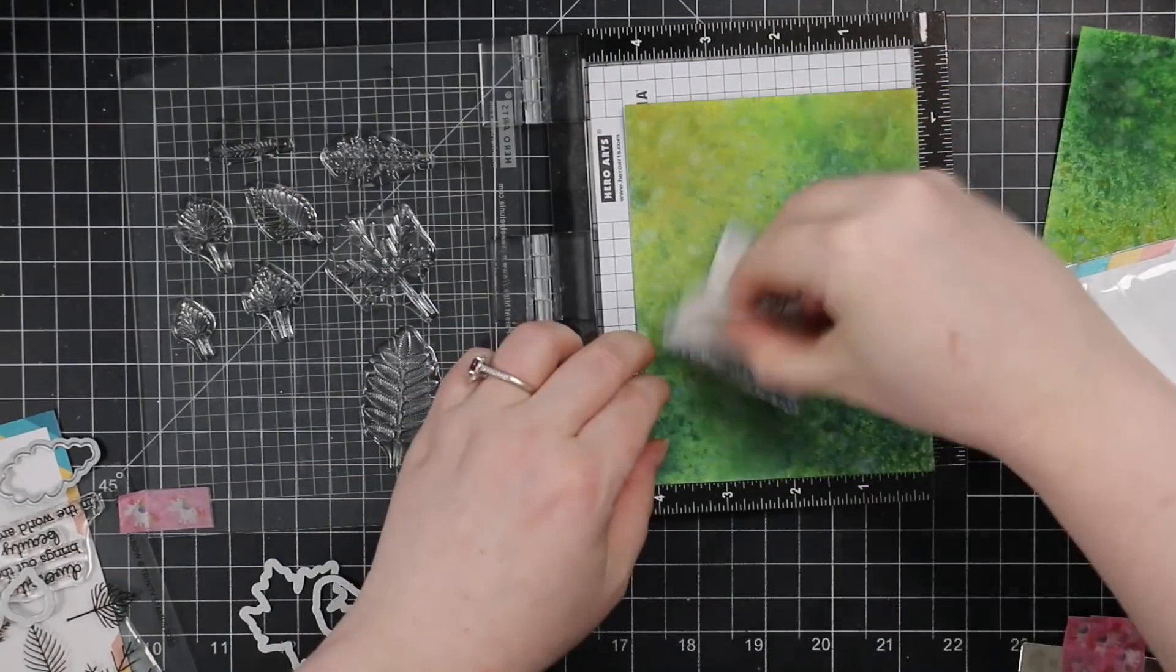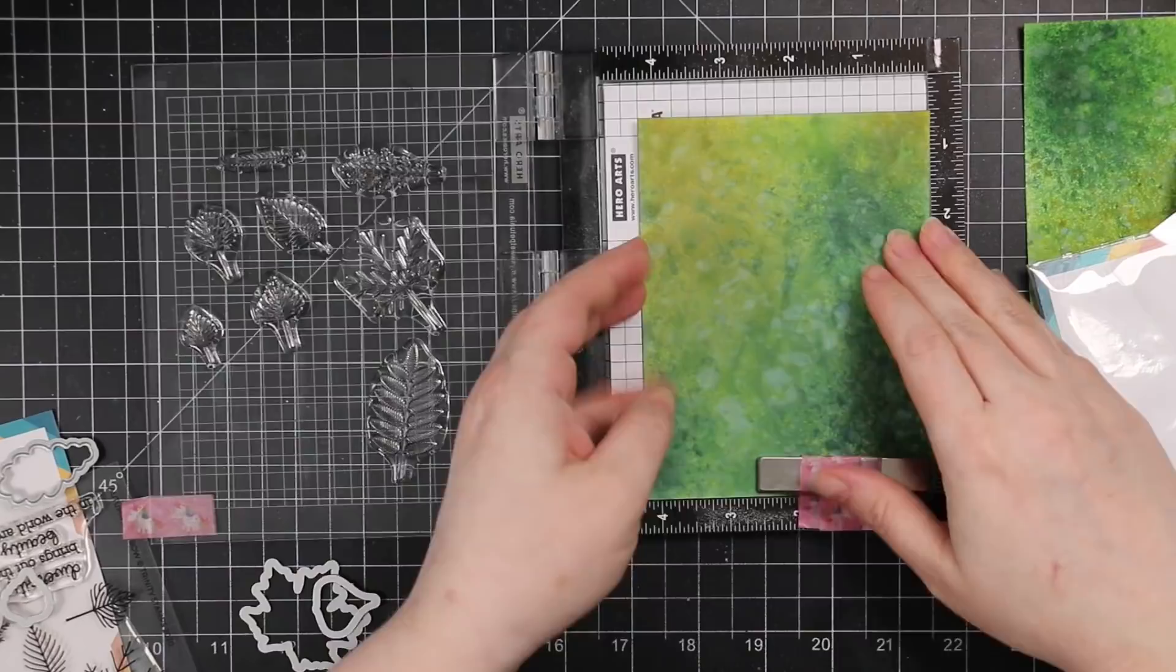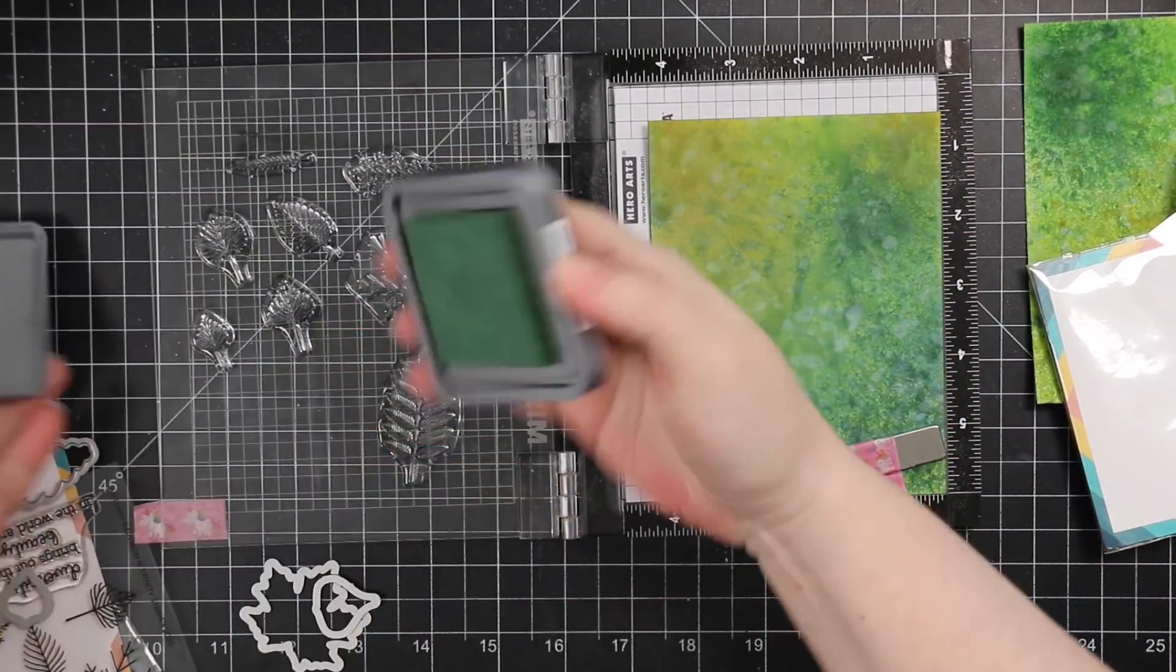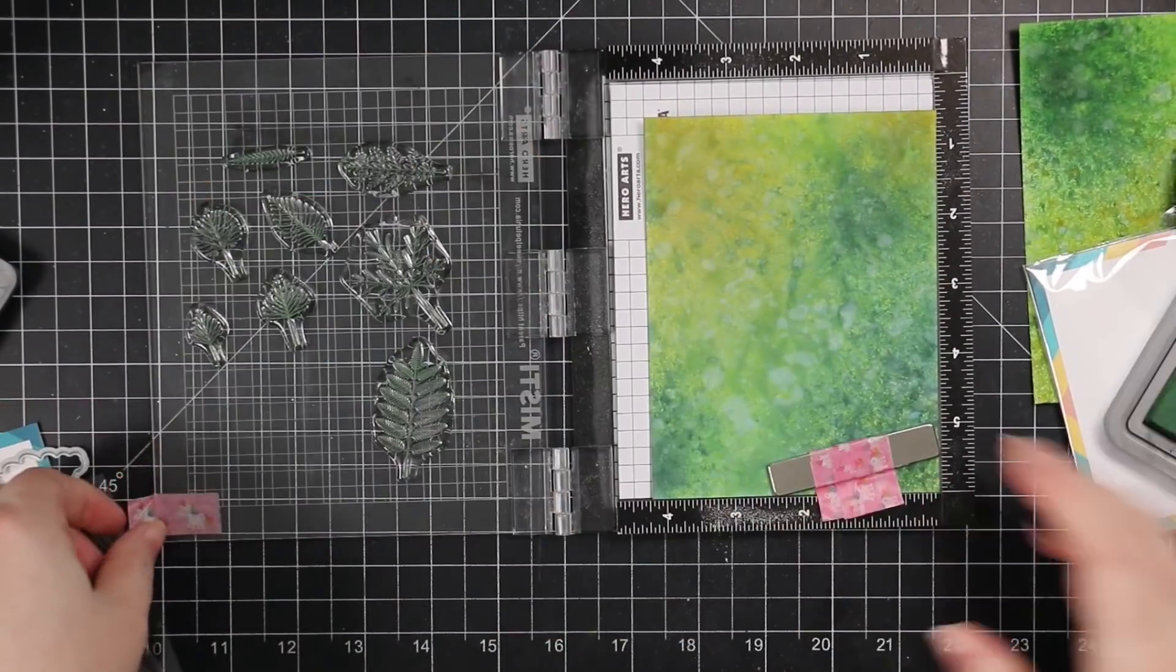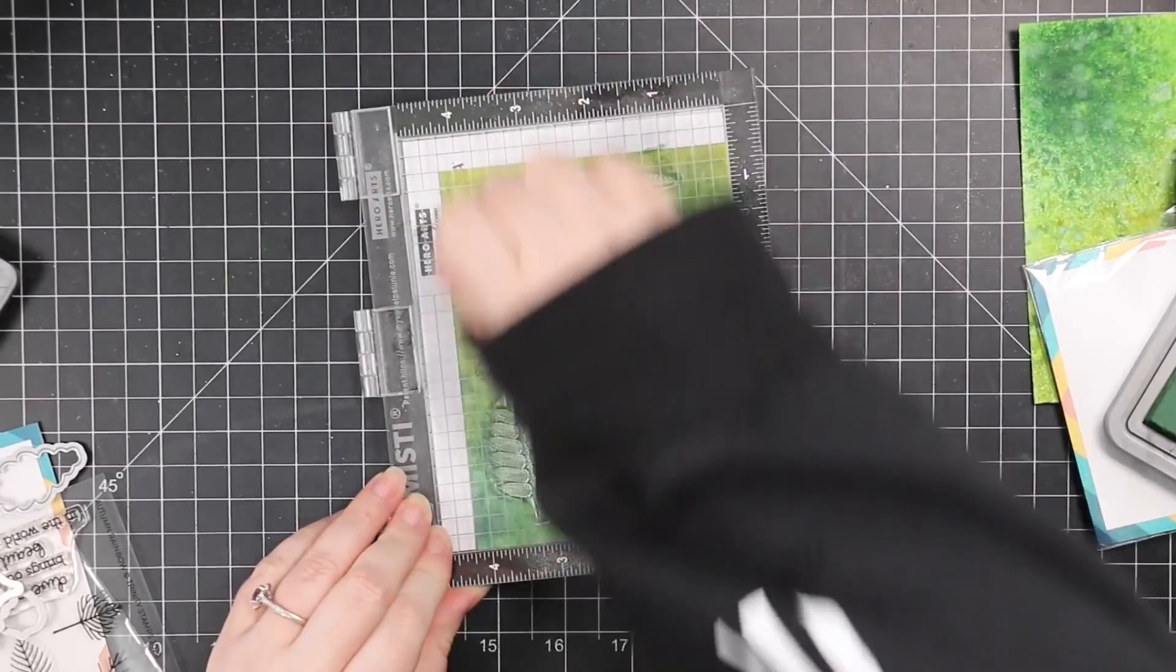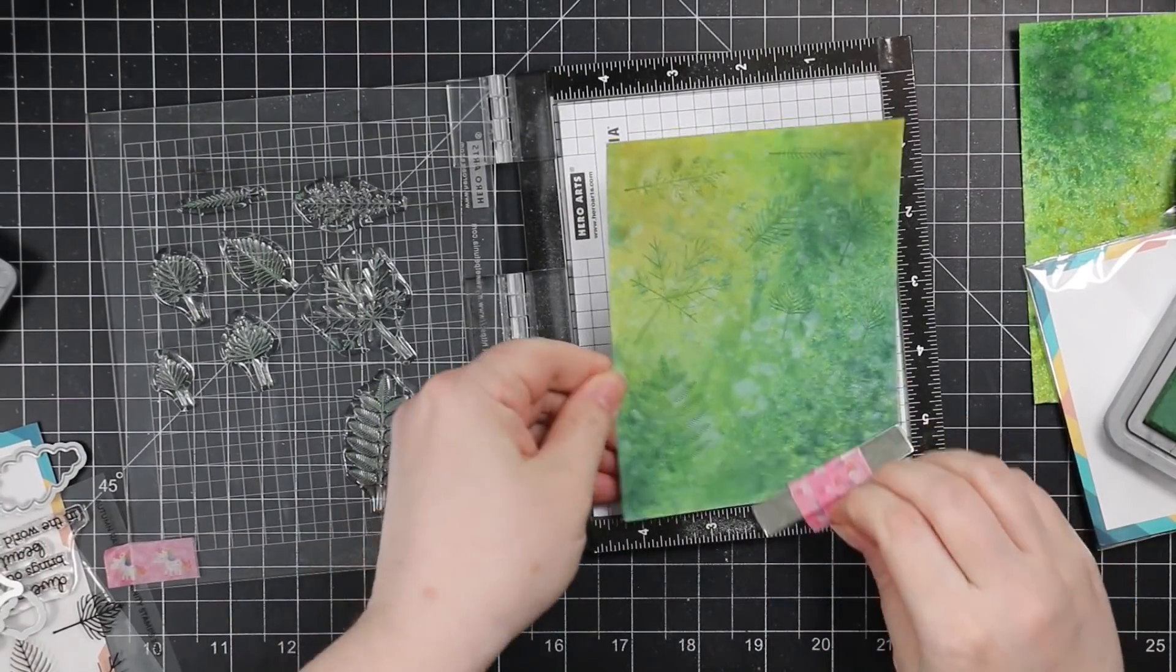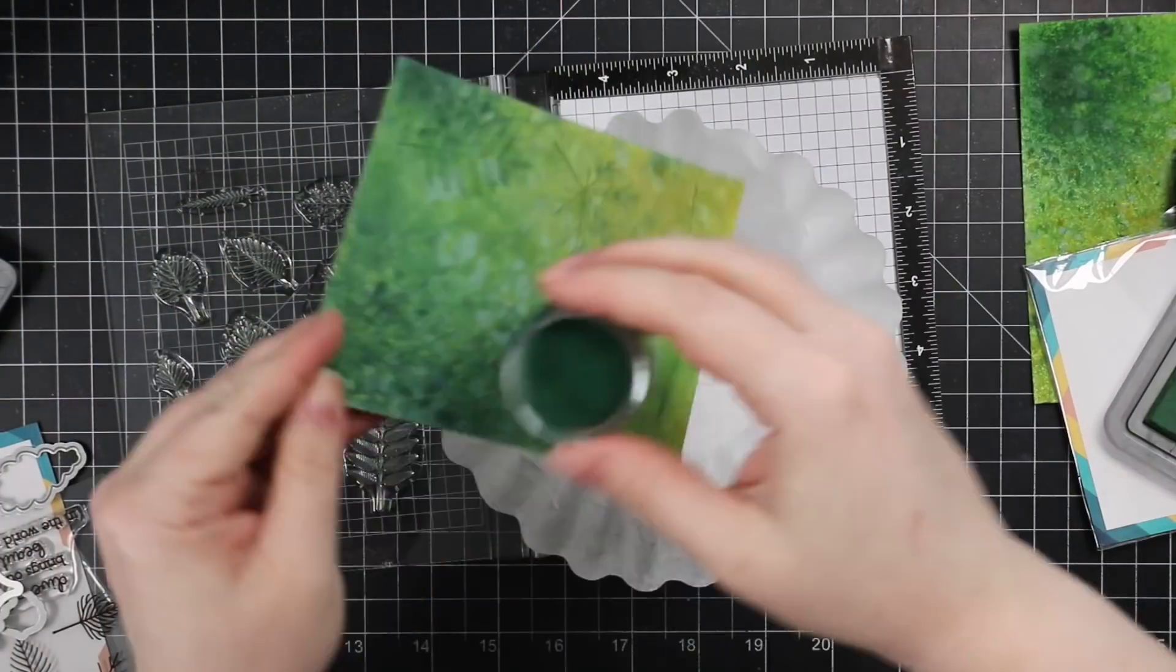So I lined up the coordinating wafer dies just to kind of give me a rough idea of where I want to stamp things. And then I lined up the coordinating little stamps and the stamps in the set are just the veins of the leaves, which I think is so much fun. And I'd use my antistatic powder tool. However, these backgrounds were heavily saturated.